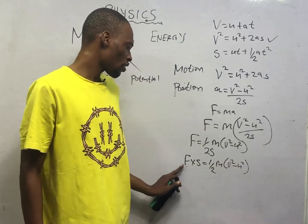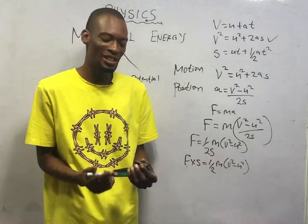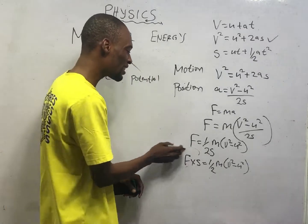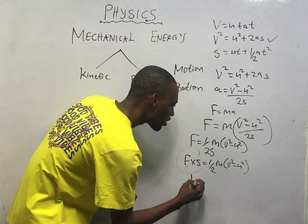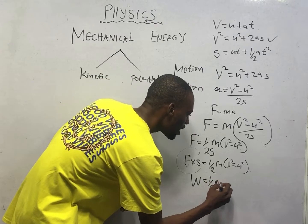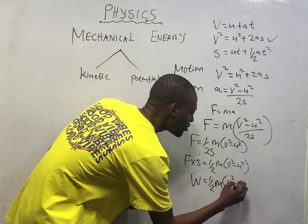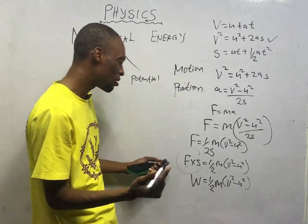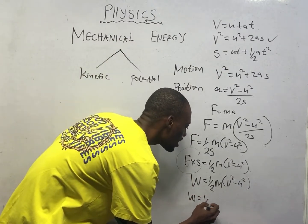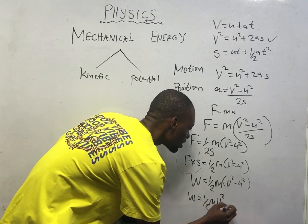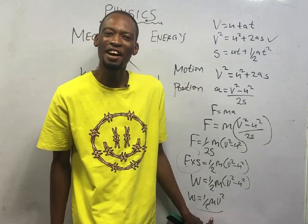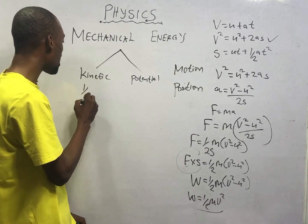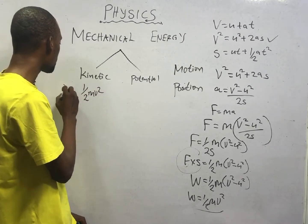What is force times distance? Earlier I explained that work done is force times distance. So replacing here, work done equals ½M(V² − U²). When initial velocity is zero, work done equals ½MV². So this work done, which is ½MV², is simply the kinetic energy. Kinetic energy is given by KE = ½MV². Any time you are given a question requiring you to find kinetic energy, you simply use ½ times mass times velocity squared.